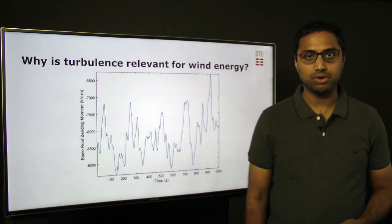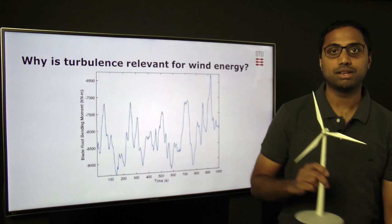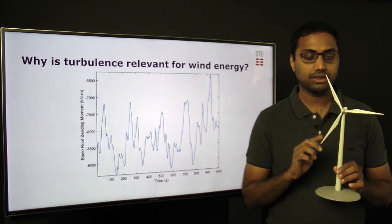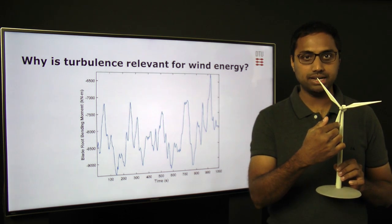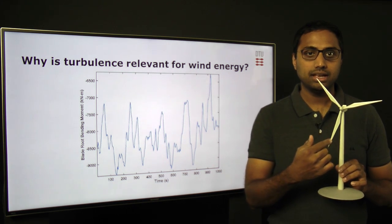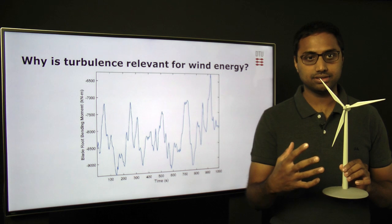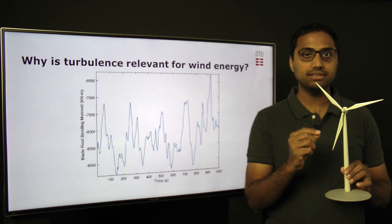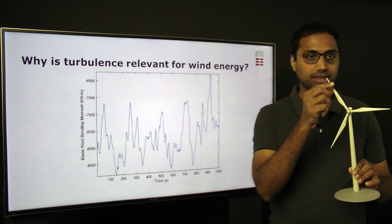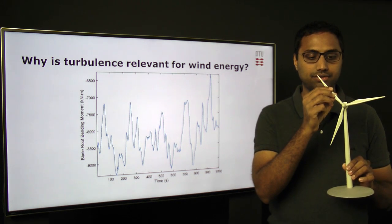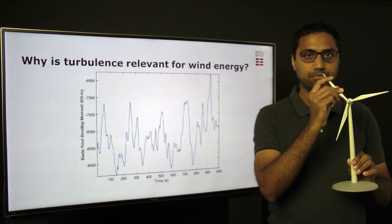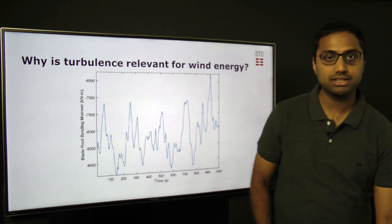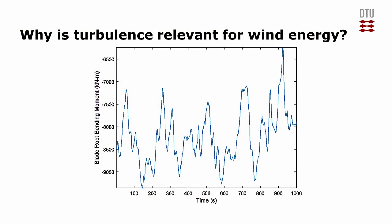So why is turbulence relevant for wind energy? We have wind turbines which rotate when the wind blows in a direction perpendicular to the rotor plane, and wind has random variations which causes loads on the wind turbine. In simple words, it causes stresses on the blade root. If we take an example of one blade, this blade simply bends as it rotates.